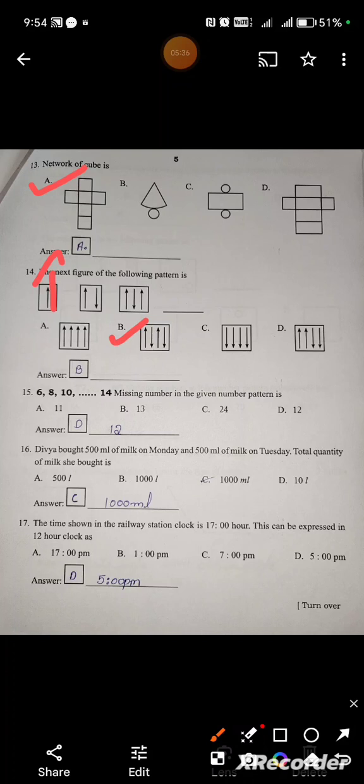6, 8, 10, blank, 14. Missing number in the given number pattern is? The pattern is even numbers, odd number series. It will be multiplication: 2 threes are 6, 2 fours are 8, 2 fives are 10, 2 sixes are 12. Option: 2 sixes are 12. Answer will be D.